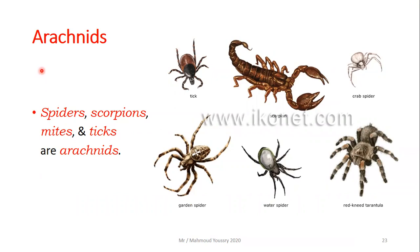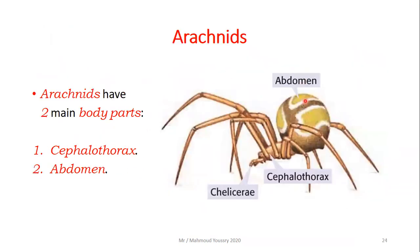The third type of arthropods is arachnids — ticks, scorpions, spiders, and mites. Arachnids have two main body parts: the head and thorax are combined into one segment called the cephalothorax ('cephalon' meaning head in Latin), and the abdomen.